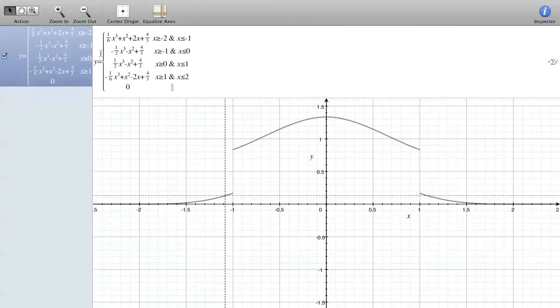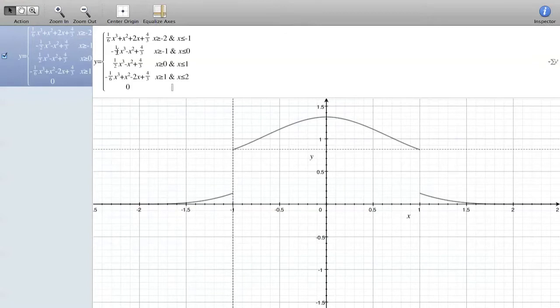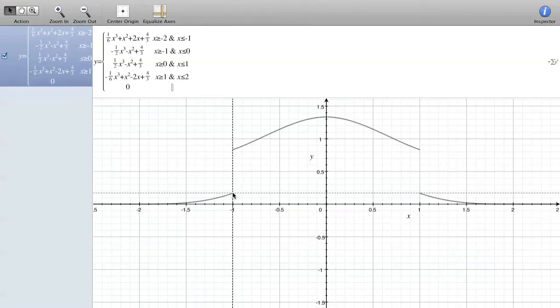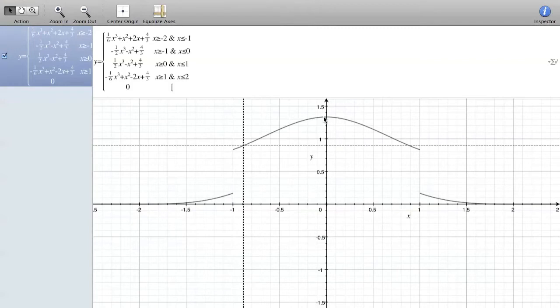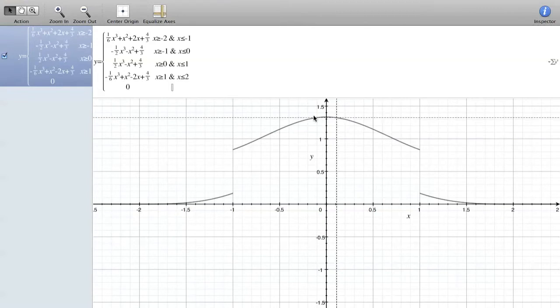So basically what you have to do is you have to plug in negative 1 into this equation. So it would be negative 1 sixth plus 1 plus negative 2 plus 4 thirds. And I think eventually that evaluates to 1 sixth.